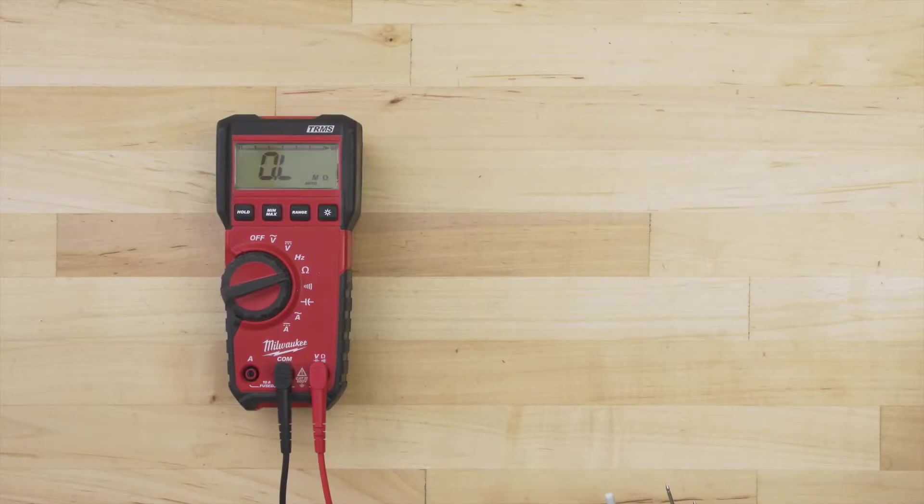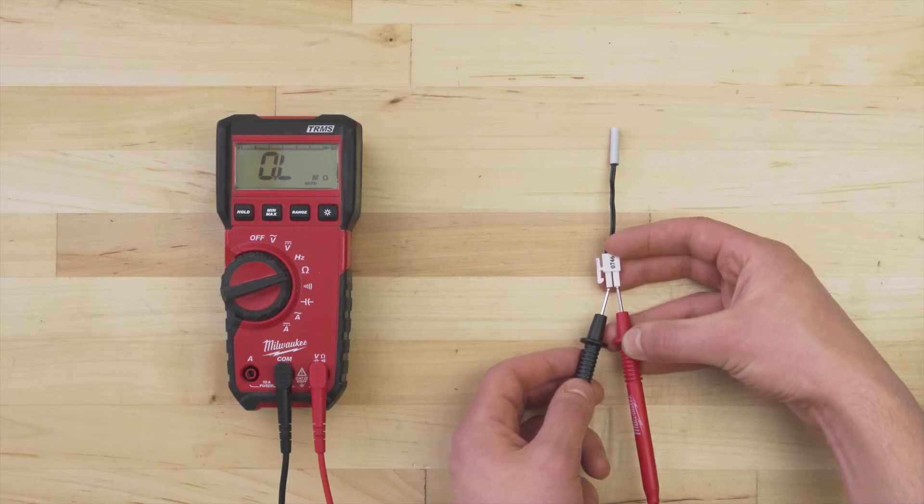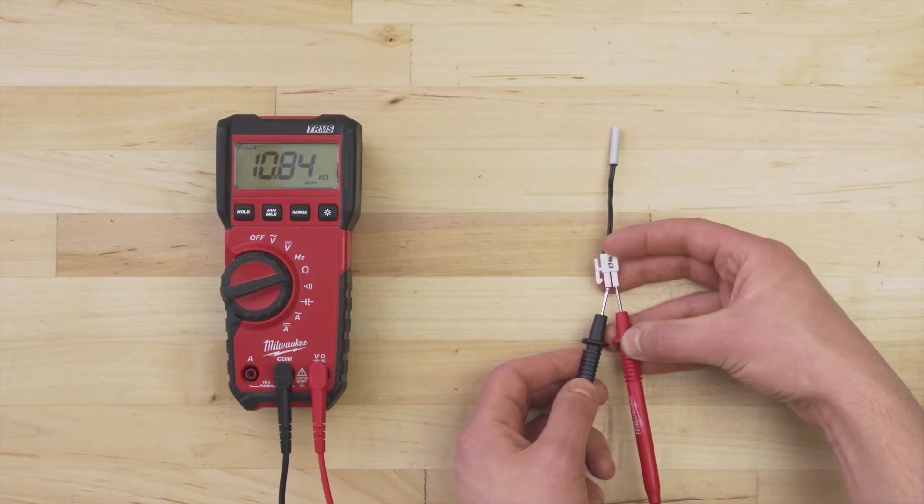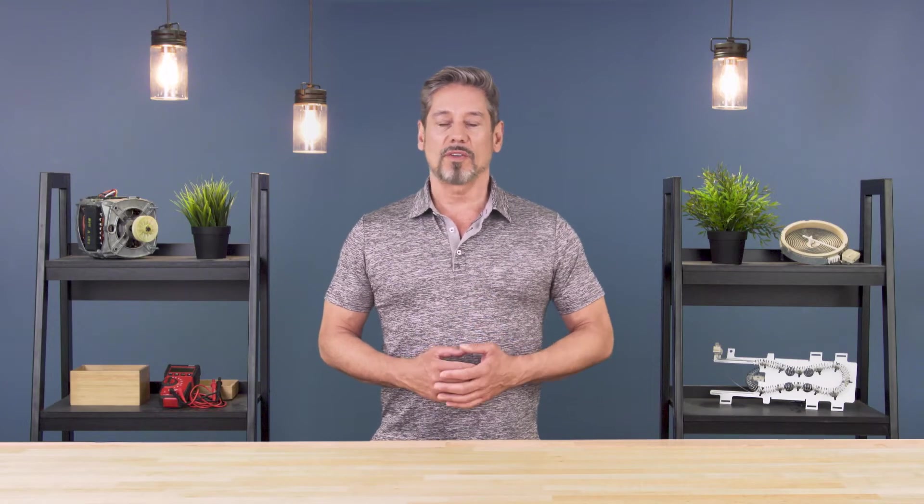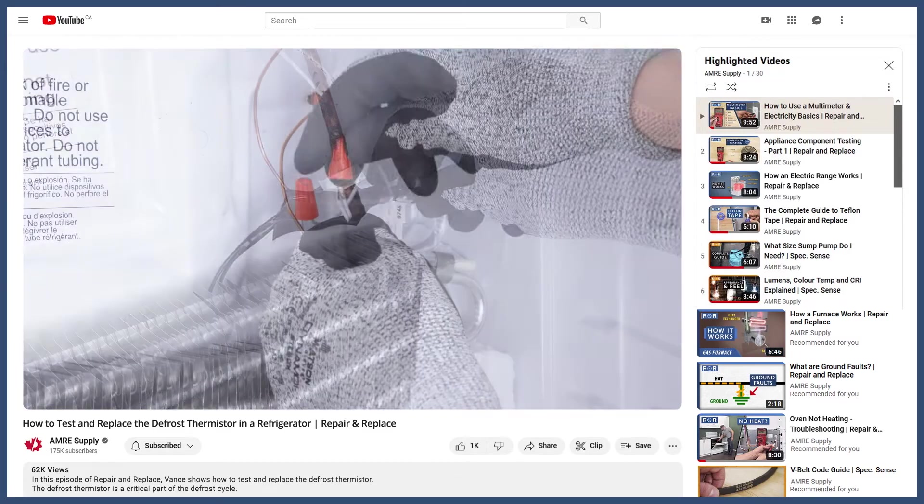Now set the multimeter to the ohms or resistance setting. Next, touch the probes to each terminal. At room temperature, we're getting a reading of close to 11,000 ohms. If the resistance is more than 10% off, or if there is no resistance and no continuity, then the sensor is faulty and should be replaced. You can see this in more detail in the video linked below.